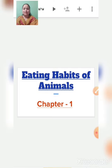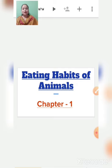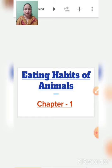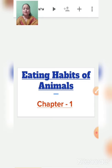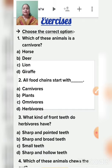Chapter one is eating habits of animals. We have already discussed this chapter, so now we will do a quick revision. As I have told you, every animal has different kinds of eating habits, and according to that they have different types of teeth and are categorized in different categories. Let's discuss the exercise.